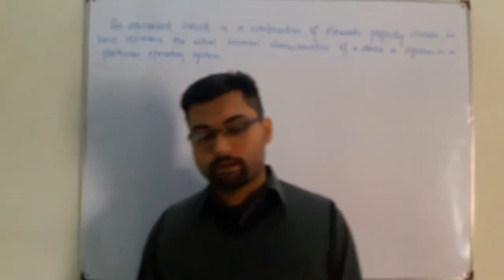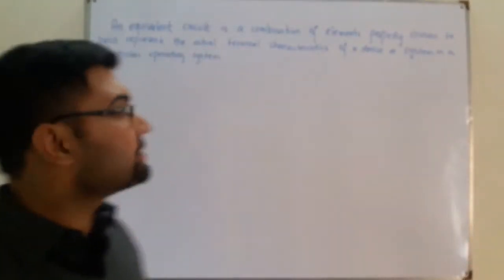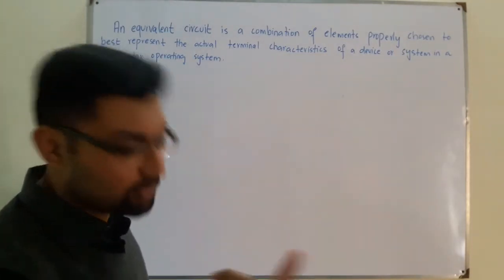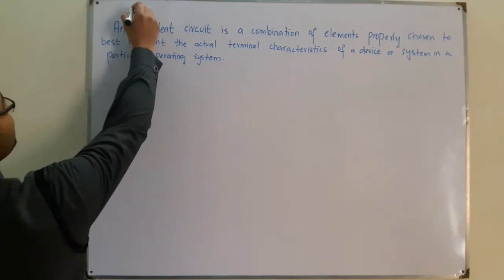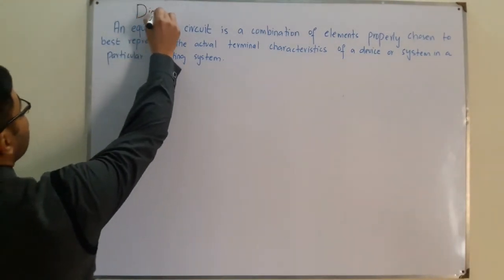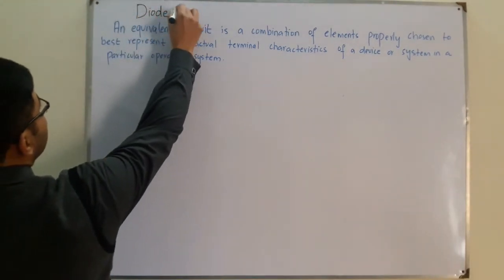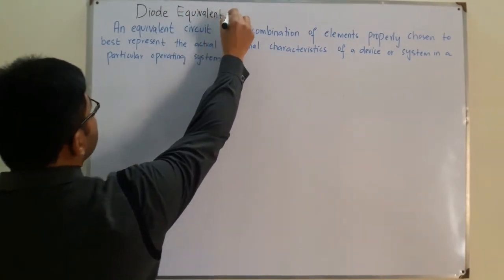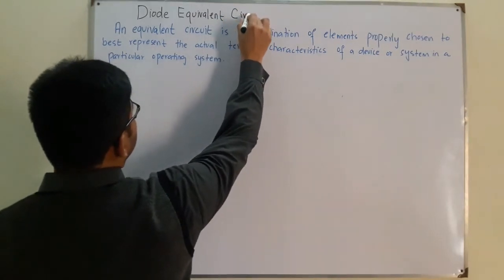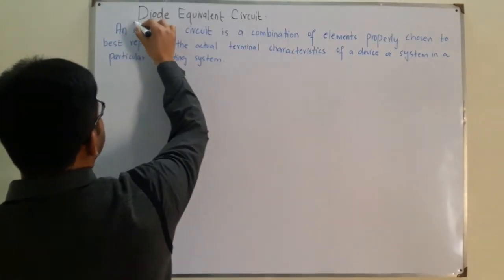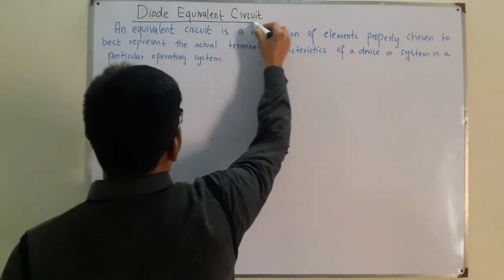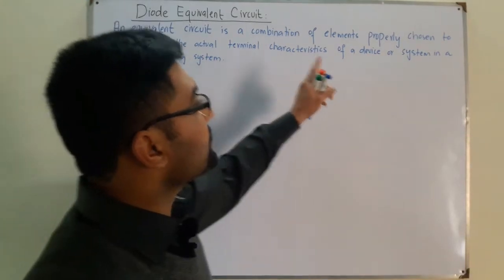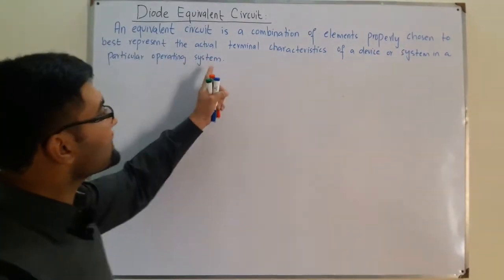Bismillahirrahmanirrahim. Assalamu alaikum. Today's topic is diode equivalent circuits. An equivalent circuit is a combination of elements properly chosen to best represent the actual terminal characteristics of a device or system in a particular operating region.